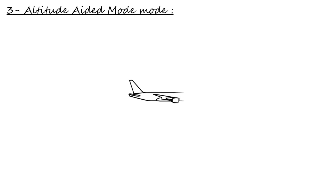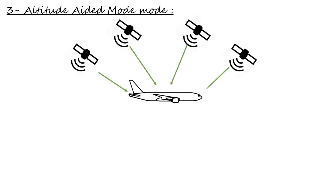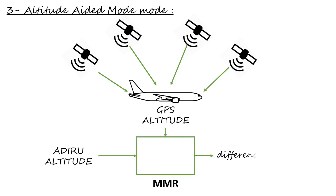Third mode is the altitude-aided mode. With 4 satellites available, the MMR stores the difference between the AIMS and GPS altitude. The MMR stores the difference between inertial and GPS altitude so that it can estimate the GPS altitude when only 3 satellites are available.